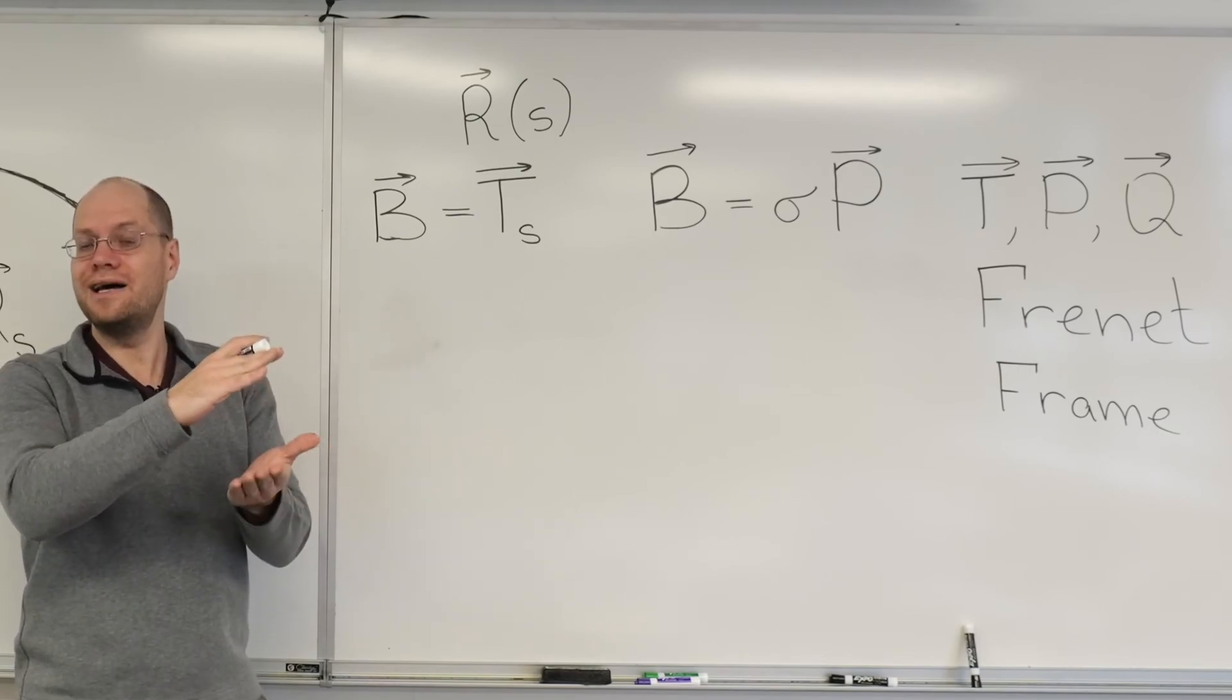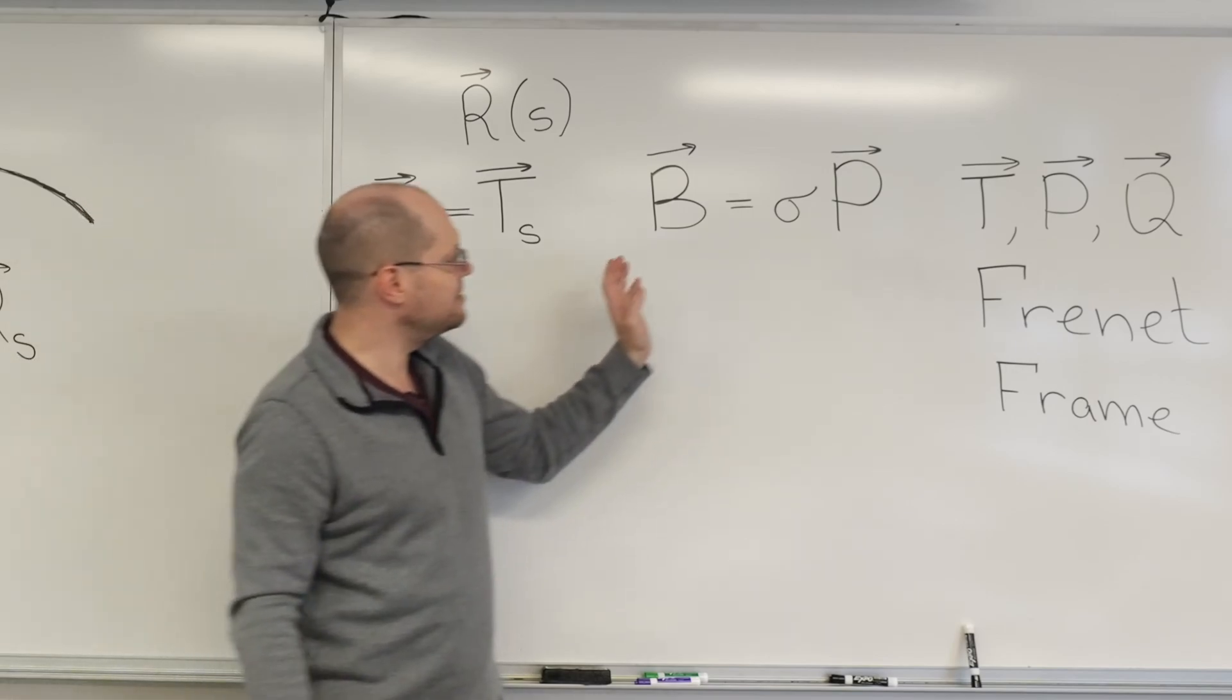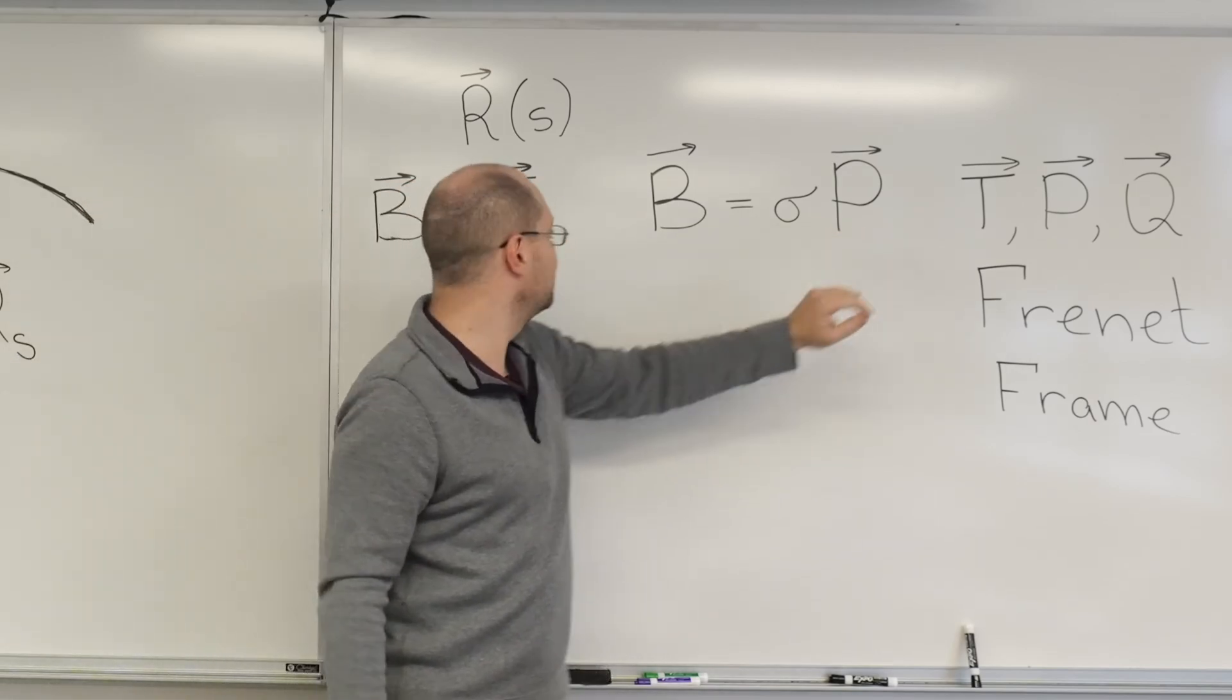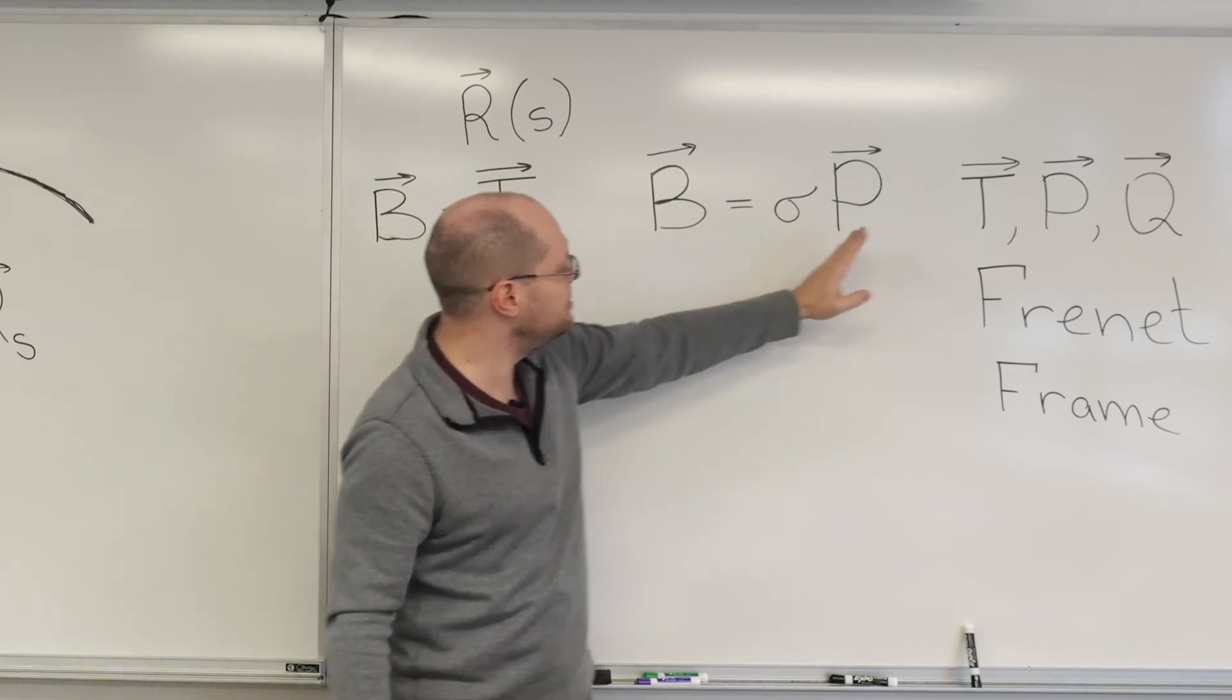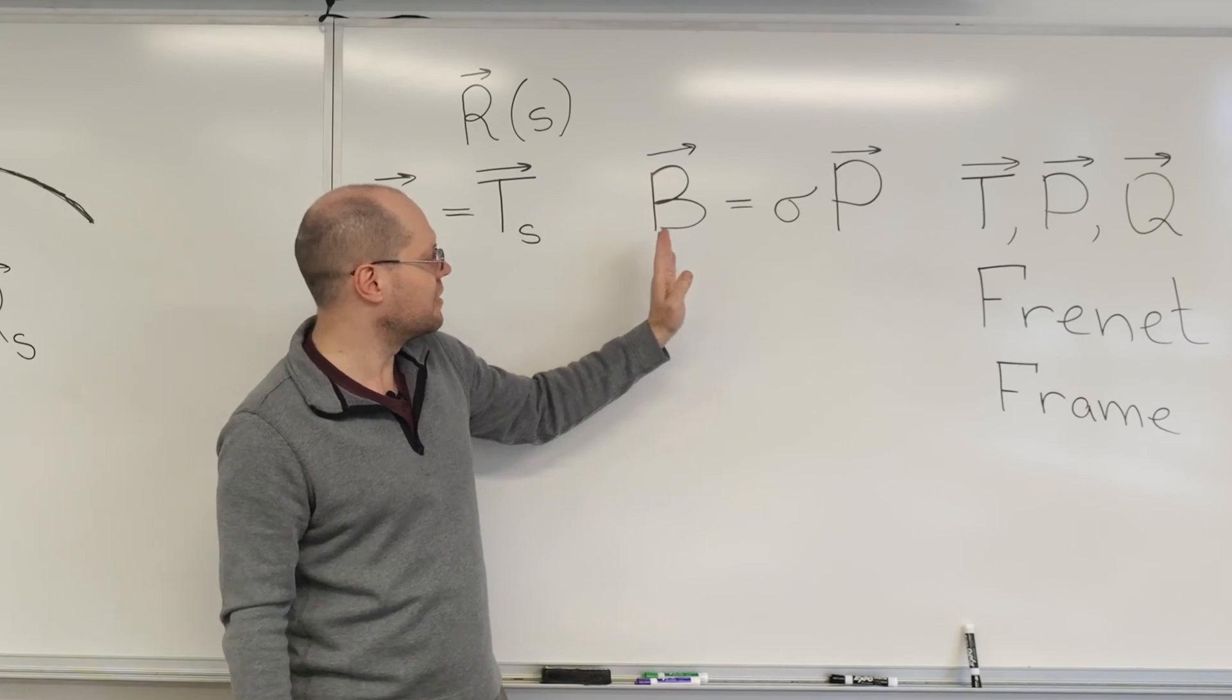So we're going to do the one thing that we can, and that's take the derivative of P, right? P is a function of S. So in this identity here, everything is a function of the arc length.